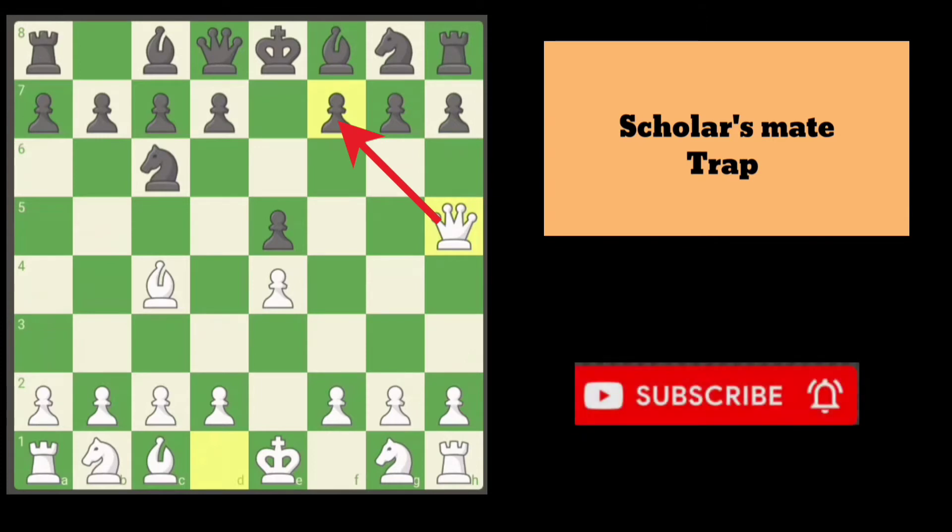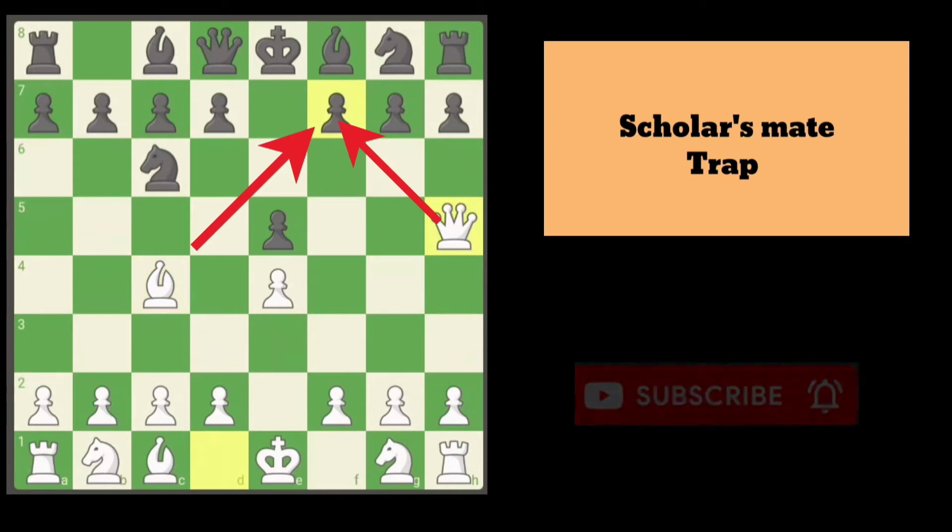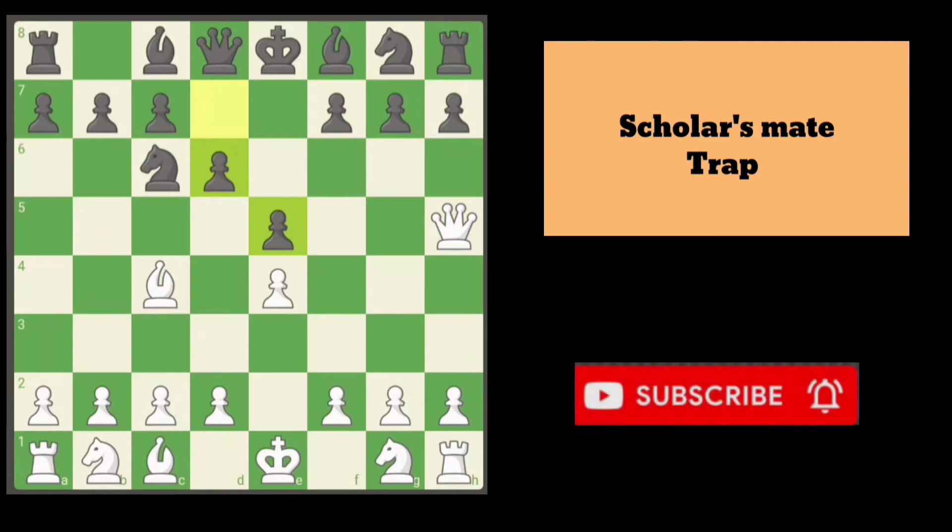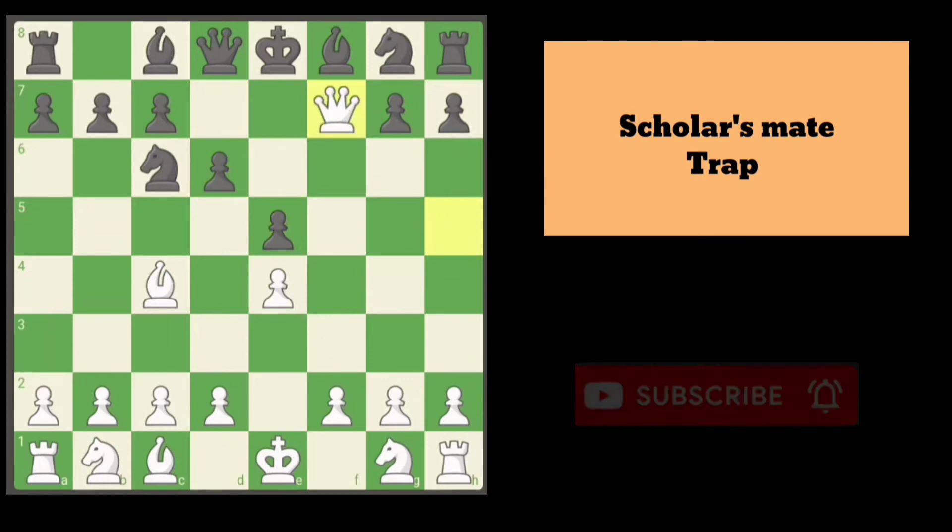Now you can clearly see that both the bishop and queen are attacking the weakest f7 pawn. If Black is not careful and plays d6 to defend the e5 pawn and control the center, the next move queen takes f7 is checkmate within four moves.